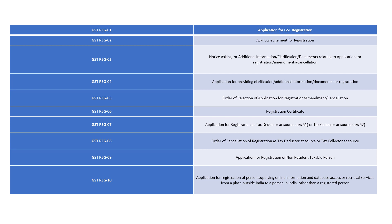GST REG-01 is the application for GST registration. GST REG-02 is for acknowledgement of registration. Note that even a casual taxable person uses the same REG-01 form — there is no separate form for a casual person.